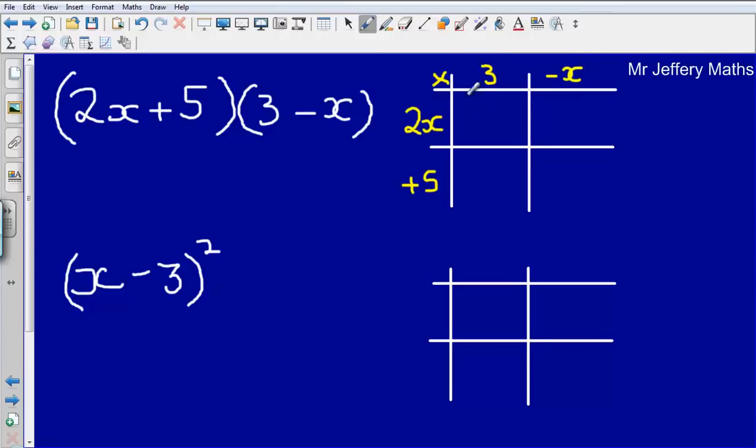Now 2x multiplied by 3 gives us 6x, then 2x multiplied by minus x gives us minus 2x squared. Then we've got 5 multiplied by 3, that gives us plus 15, and then 5 multiplied by minus x gives us minus 5x.